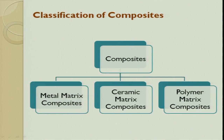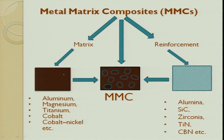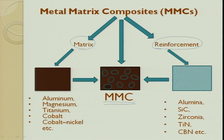When we go to classification of composites, we are now focused on metal matrix composites. Composites are made of a matrix and a reinforcement. Mixing the matrix and reinforcement gives us the metal matrix composite. Possible matrix materials include aluminum, magnesium, titanium, cobalt, and cobalt-nickel. Depending on requirements, the matrix can be tweaked into alloys to meet specific needs.